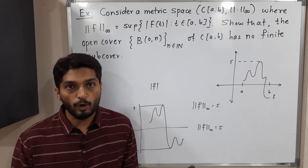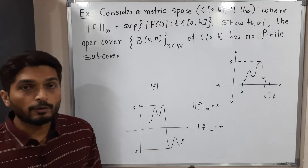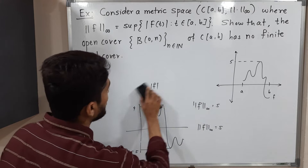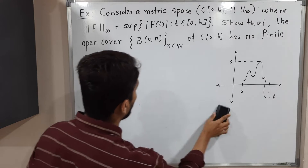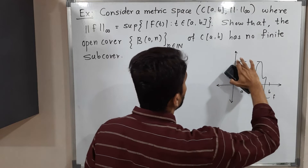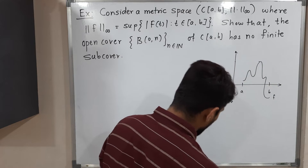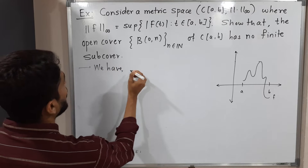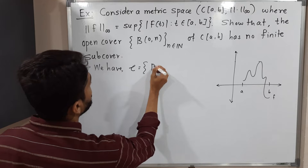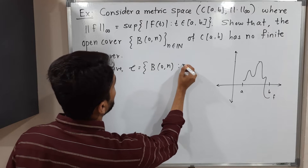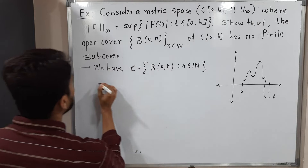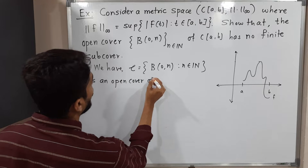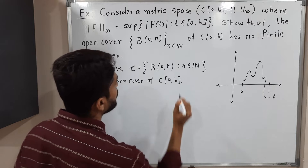So they have given us a metric space and the norm. They have also given us a cover, and we have to prove it has no finite sub-cover. We have the collection of balls — script C — defined as {B(0, N) : N belongs to the natural numbers}, and this is an open cover of C[A,B].